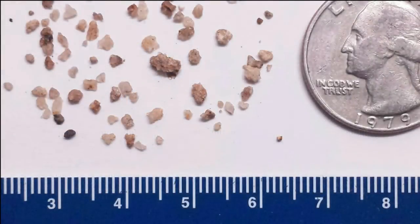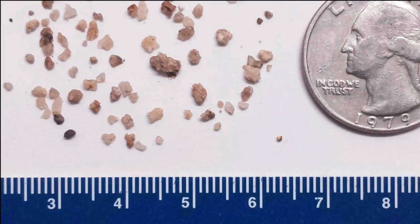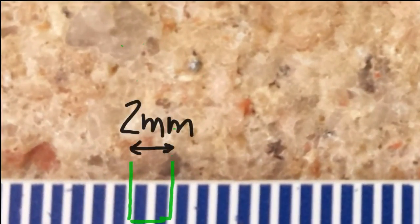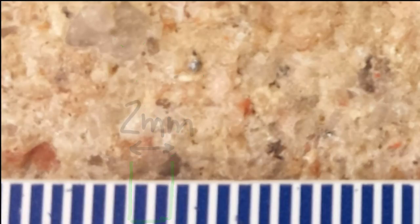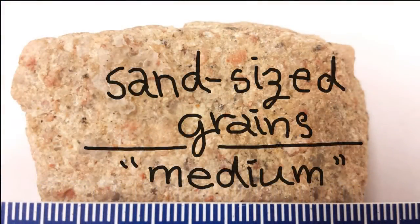Most of these grains are in the size range of sand. This rock is composed of particles about a millimeter or two in size. We call these particles medium-grained. Medium-grained particles in clastic sedimentary rocks are referred to as being sized like sand grains.